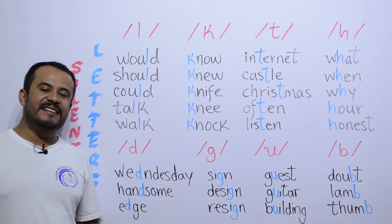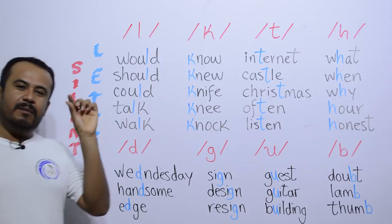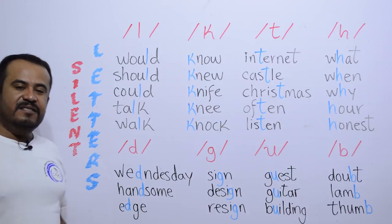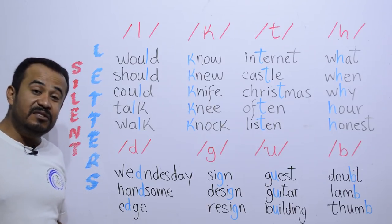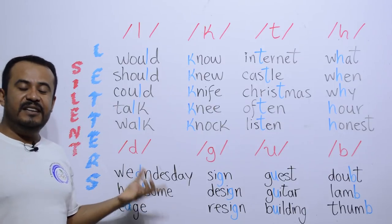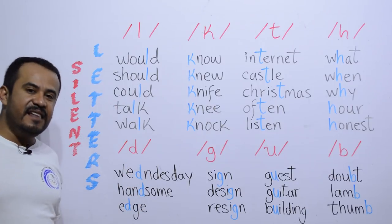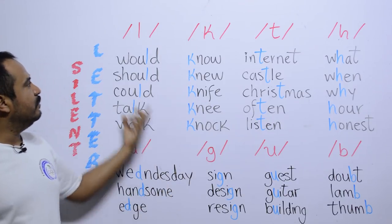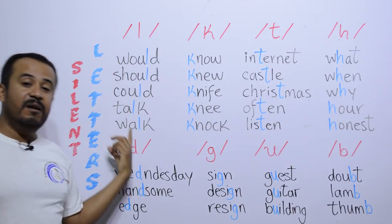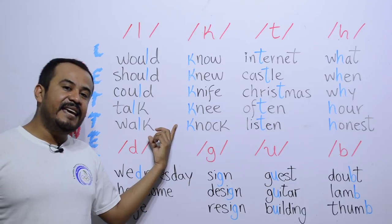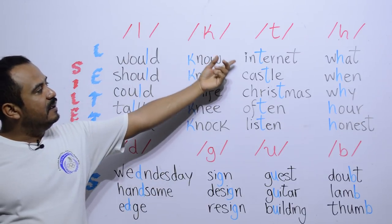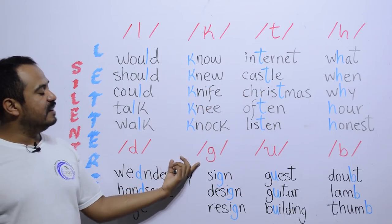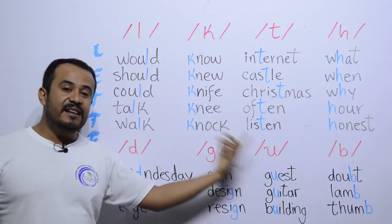Hello friends, welcome back to another English lesson. In today's video we're going to be practicing pronunciation through words with silent letters. We have a lot of words with silent letters — for example the silent L, the silent K, the silent T, the silent H, silent D, silent G, silent U, and silent B.